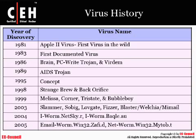If we look back at virus history, we look at 1981 — there's the Apple II virus, the first virus in the wild. From 1990 through time we start looking at the AIDS Trojan, some of the concepts, Storage Brew, Melissa, Slammer, iWorm, Email Worm, Win32, Zafi — there's a whole bunch of different viruses. You've probably had personal exposure with several of them.